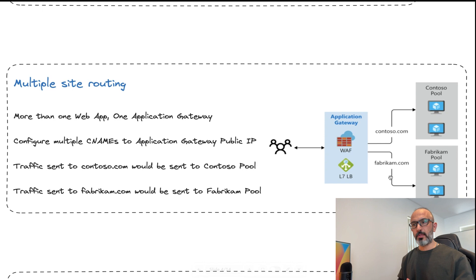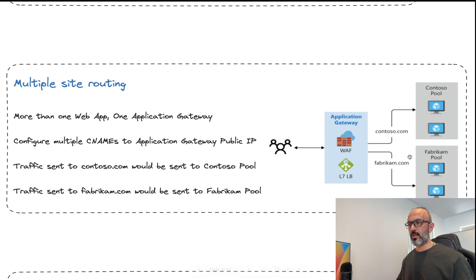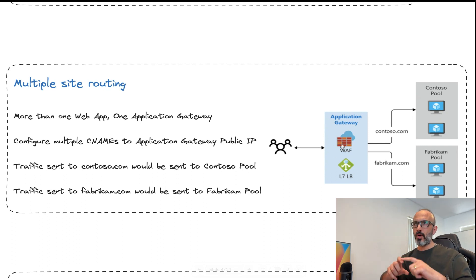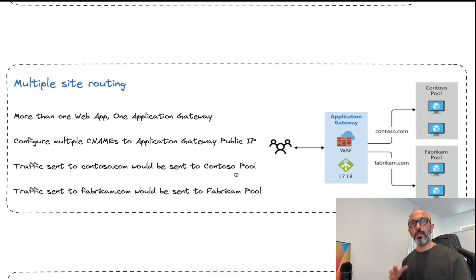The next is called multiple site routing. Say you have multiple web apps, each with its own CNAME — for example, contoso.com and fabricon.com. Azure Application Gateway will forward traffic based on where the request is sent. If it is sent to contoso.com, it forwards to the contoso backend pool. If it is sent to fabricon.com, it sends to the fabricon pool of services. And the logic gets only deeper from there.